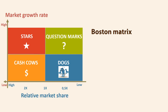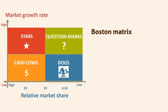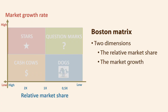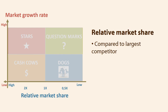Let us now review the construction of the model. The Boston Matrix consists of two dimensions. On the X-axis, we find the relative market share, and the Y-axis is the market growth in percentage. Market share is an indicator of the extent to which the product can generate revenue. Relative market share is measured as compared to the largest competitor in the business area. The X-axis is read from the center of the figure, where 1x means the same size.